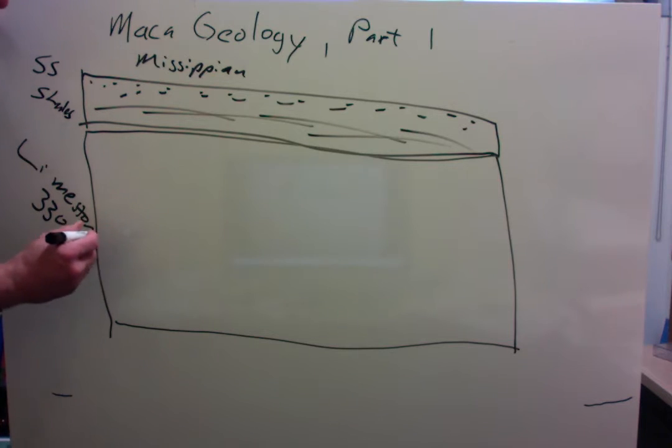All of the caves are in the limestone. And remember, limestone is made out of calcite. And calcite is a mineral that dissolves in weak acid. So it chemically erodes very very easily. And so these rocks are 330 million years old.